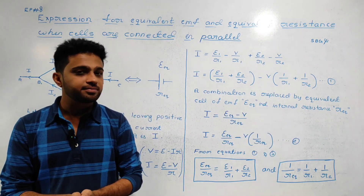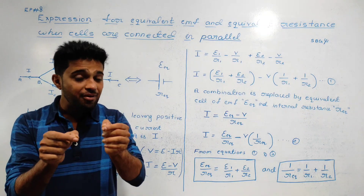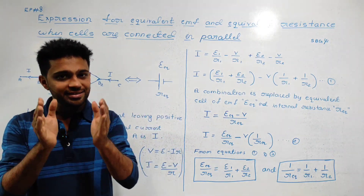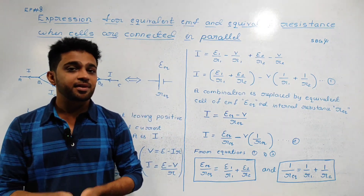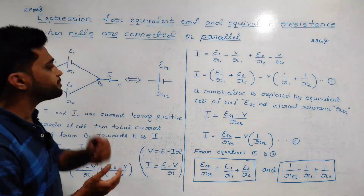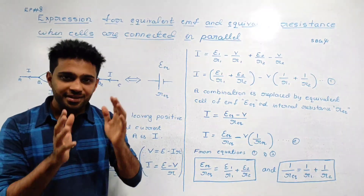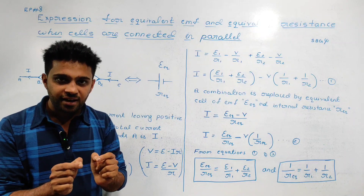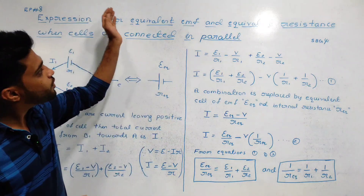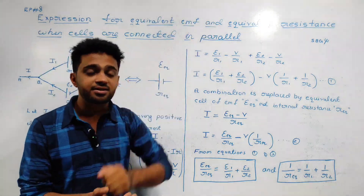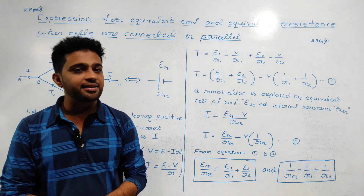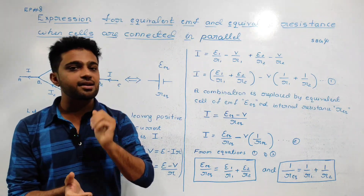This topic is covered when cells are connected in series. Now, in this class — class number 8 — we are deriving the expression for equivalent EMF and equivalent resistance when cells are connected in parallel.